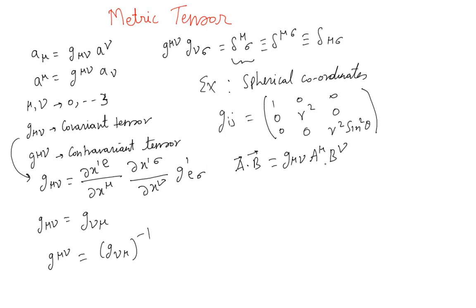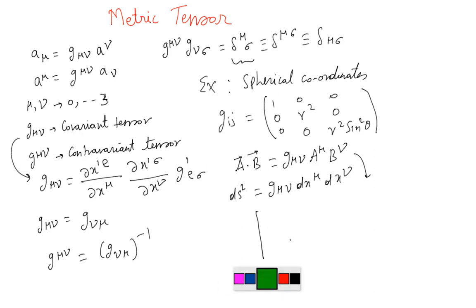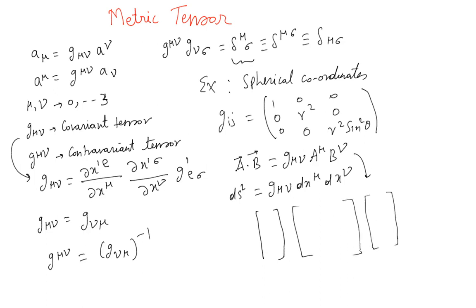For example, dS², the distance between two points separated by an infinitesimal interval, is G_mu_nu dX^mu dX^nu. This expression can be understood as a matrix product where G is the metric matrix, and the two vectors are A and B.